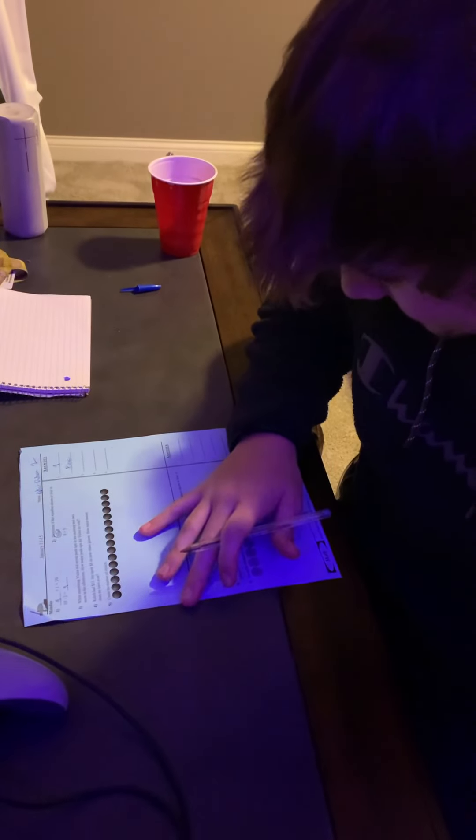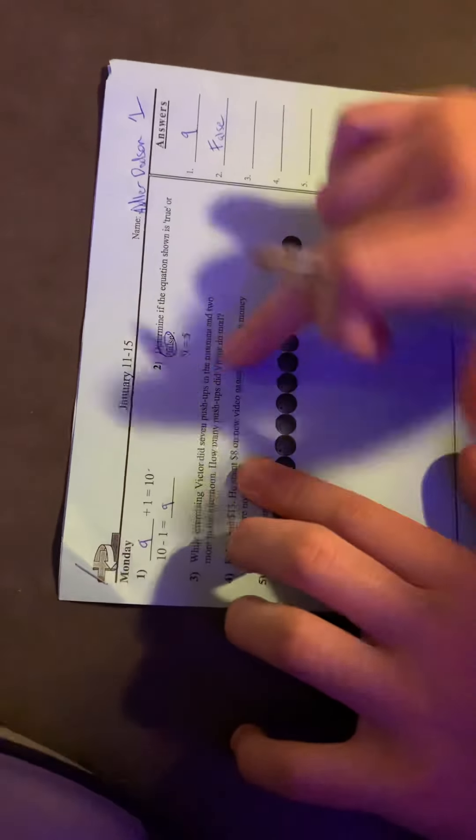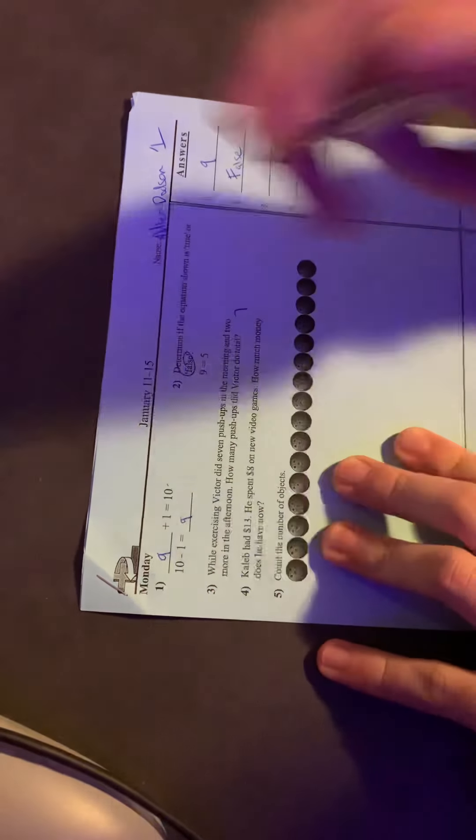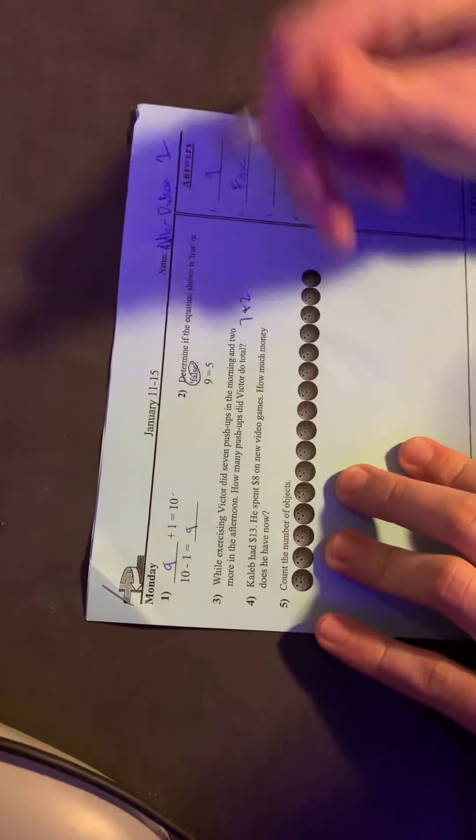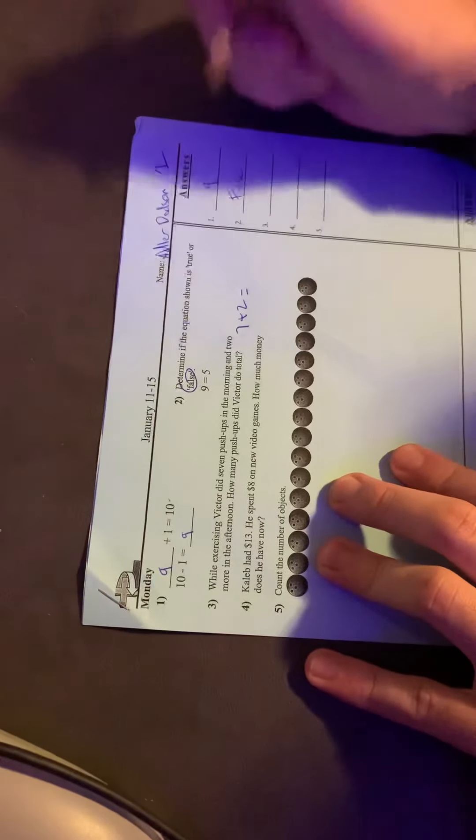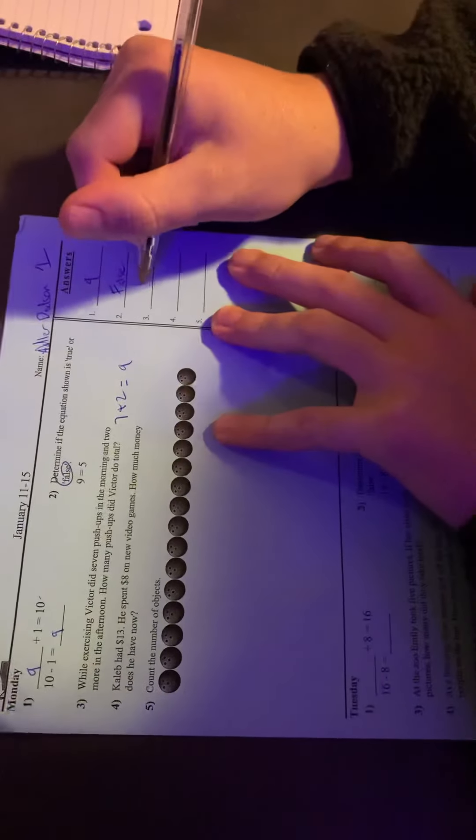We're going to add these up. You do the first day added to the second day. Victor did seven pushups in the morning, so seven, and he did two more in the afternoon. So I'm adding those because he did more. How many pushups did he do total? That equals nine. Booyah. Quick math, nine for number three.